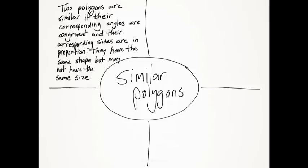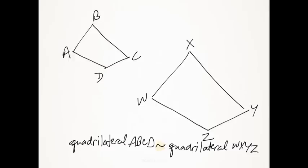So what you need to do is look for corresponding parts in addition to corresponding angles. Here we have two poorly sketched quadrilaterals, but we're stating that they are similar. Quadrilateral ABCD is similar to quadrilateral WXYZ.